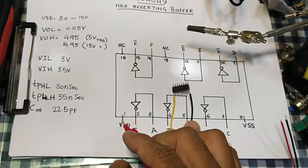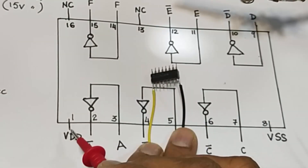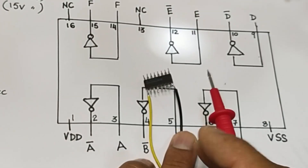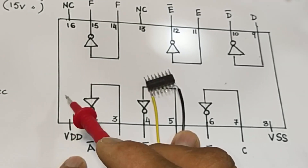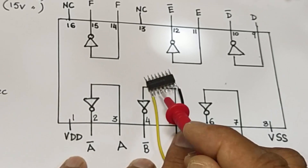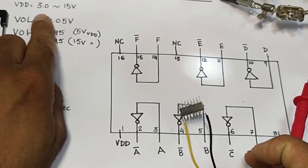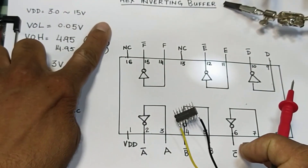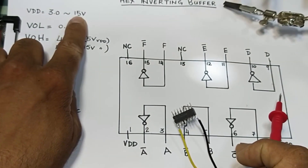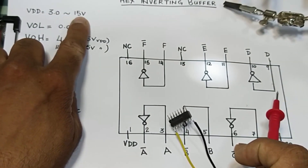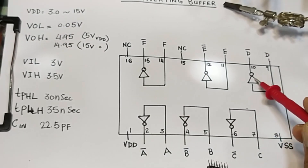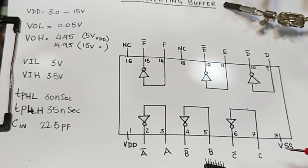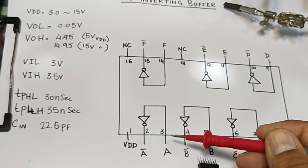Pin number one is VDD — positive voltage. TTL ICs have just a 5 volt range, from 4.75 to 5.25 volts. But this IC has a very wide range: 3 volts to 18 volts, though the normally recommended safe voltage is 3 to 15 volts. It has six inverters inside. Pin number eight is ground.